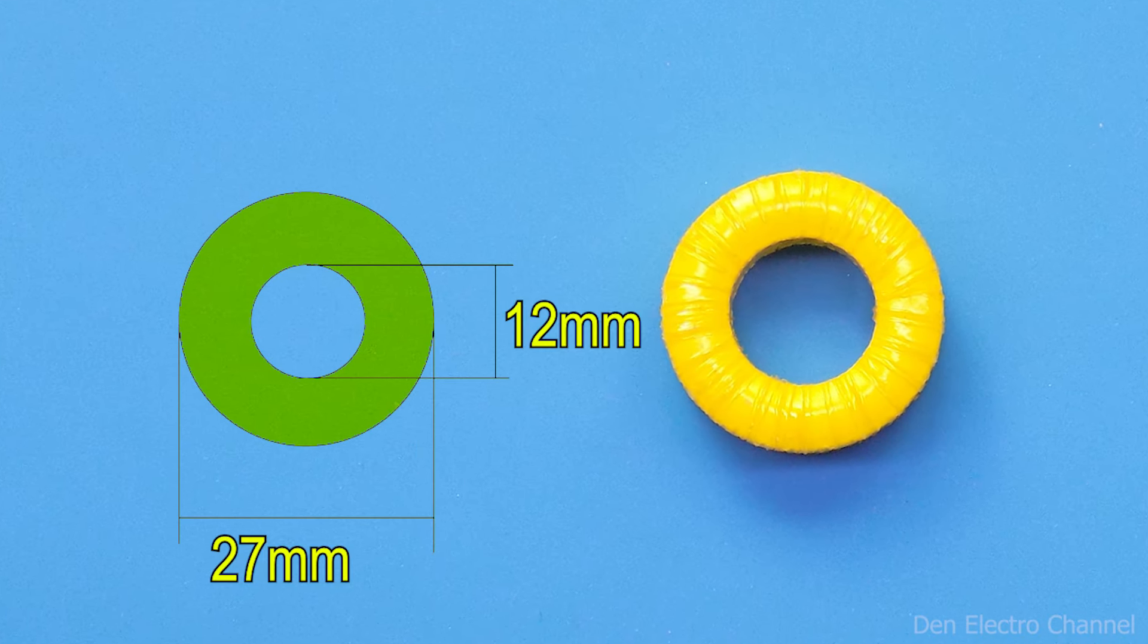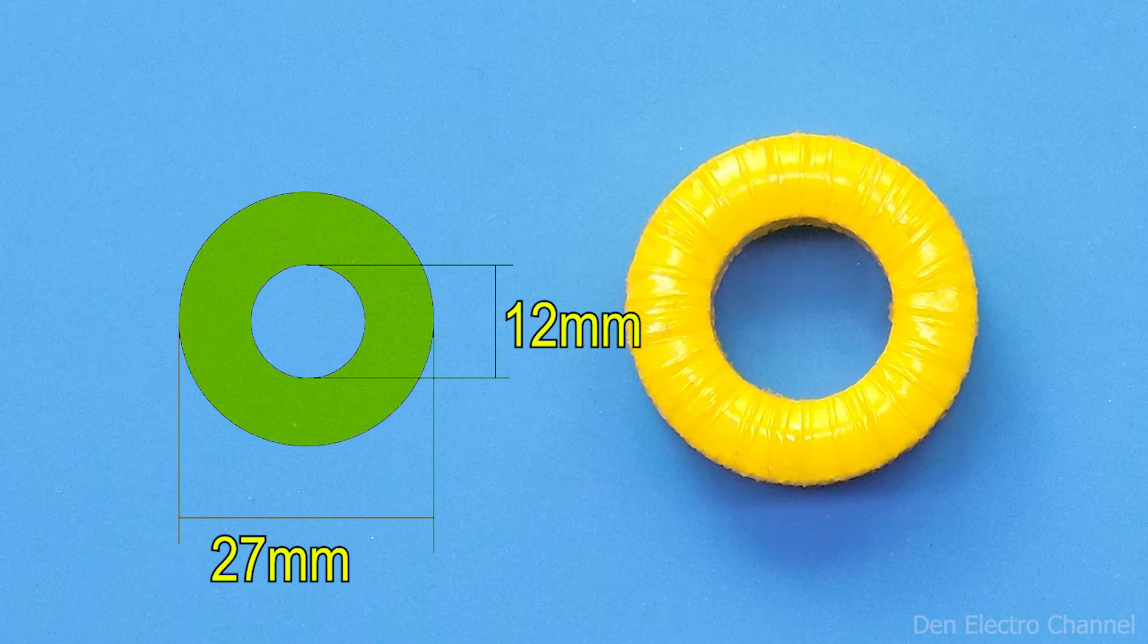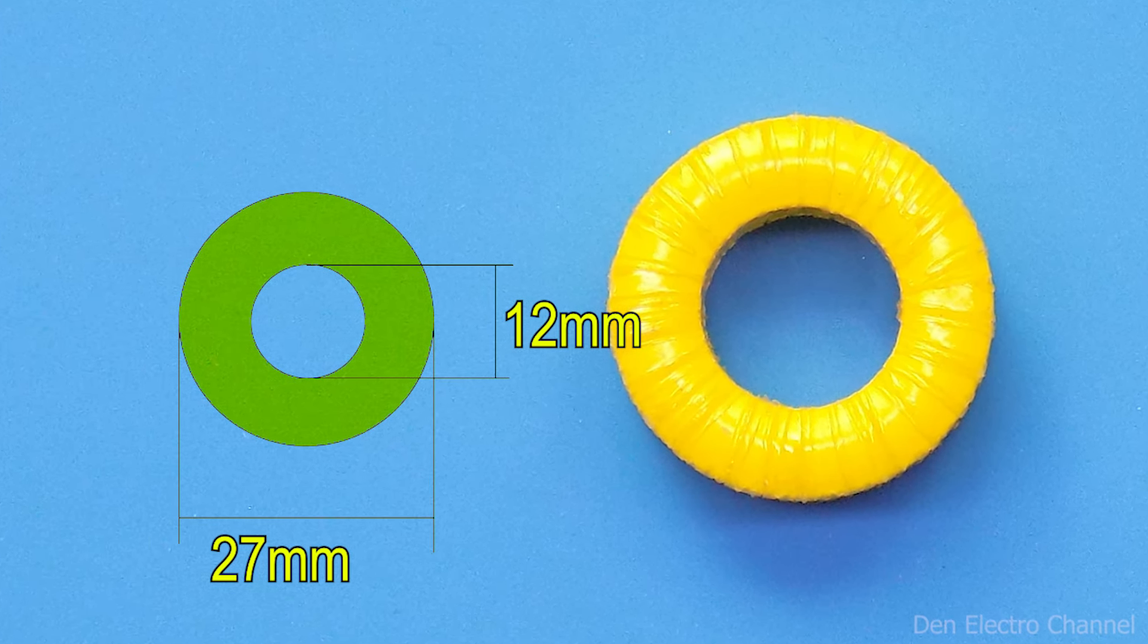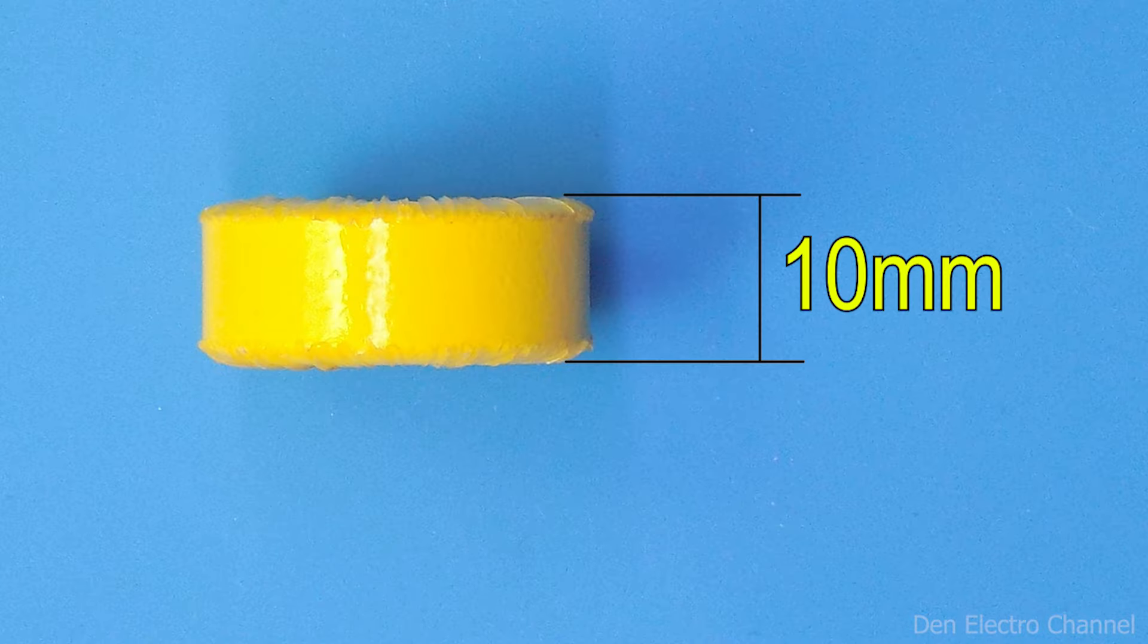For the output choke L2 I will use this ring with a white stripe. I took it from a computer power supply. I removed all the windings from it. But I used two wires from there.